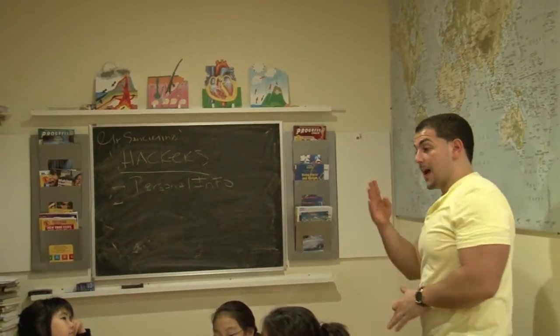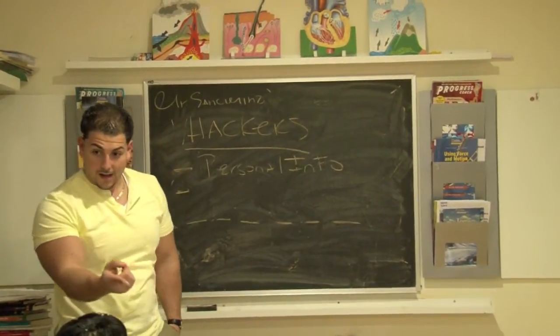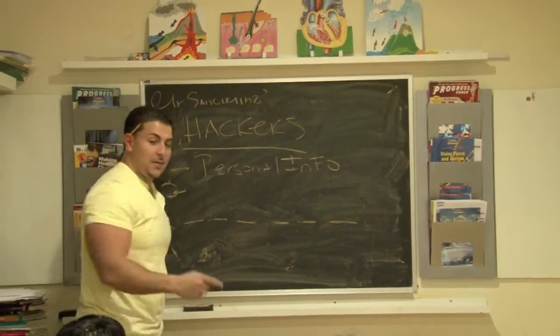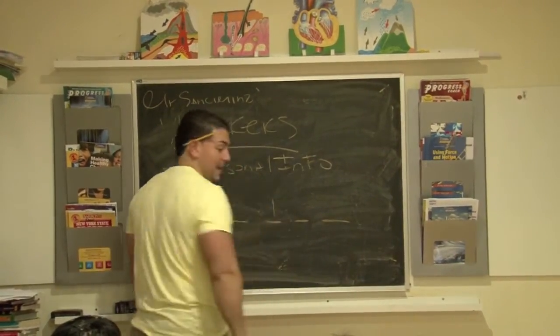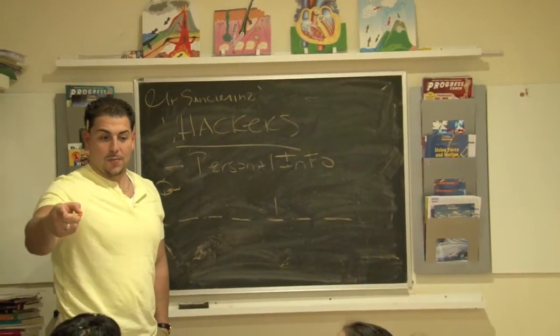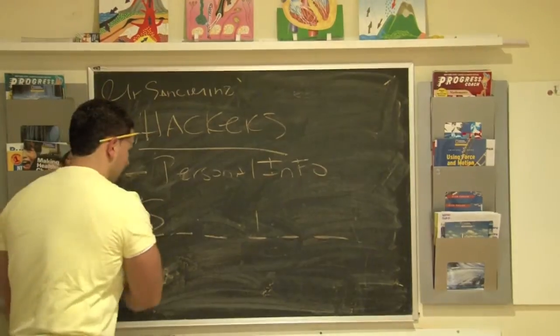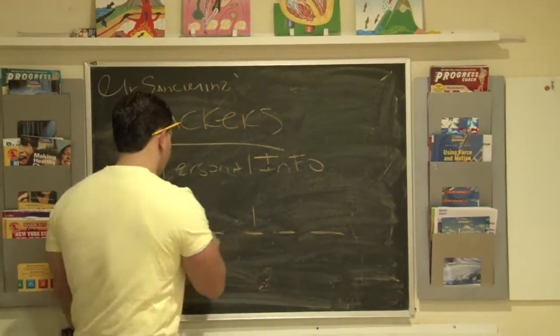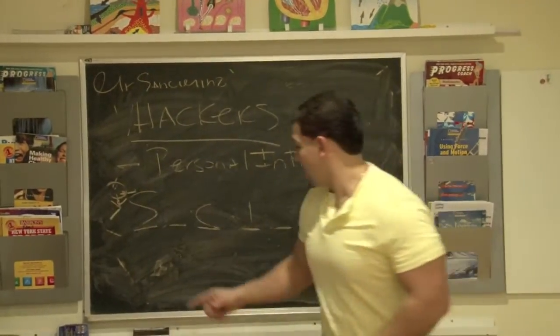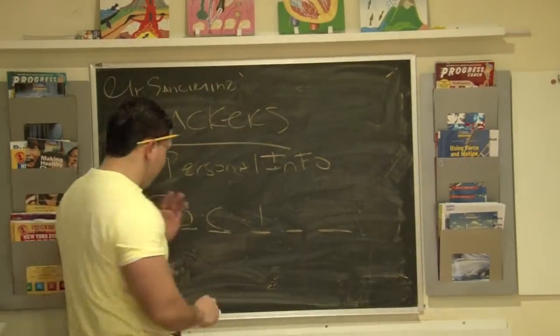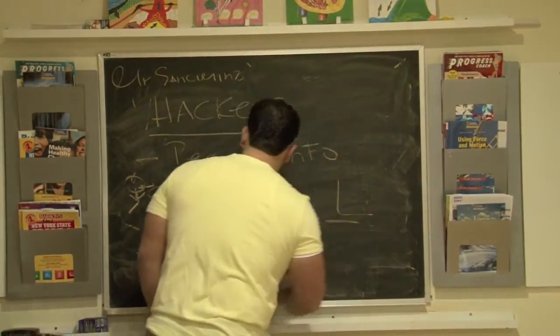Through an interactive spelling activity with students calling out letters (S, O, C, I, A, L), the class works together to spell out 'SOCIAL,' leading to a discussion about social security numbers.